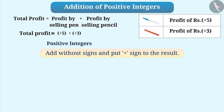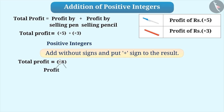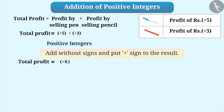Using this method, addition of +5 and +3 without signs will result in 8. Then, we get the total profit by prefixing the result with a plus sign, that is +8. Here, the plus sign represents profit and the number represents the value of profit. Therefore, we can say that the shopkeeper got a profit of Rs.8.